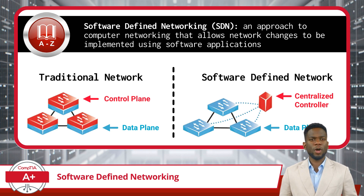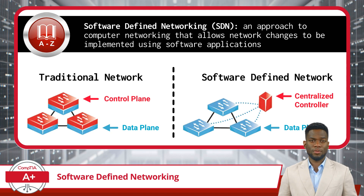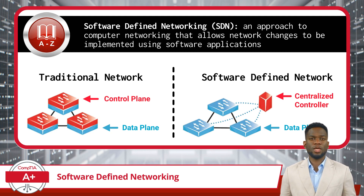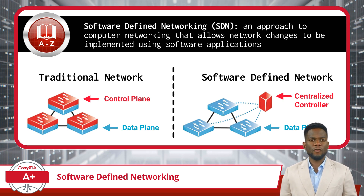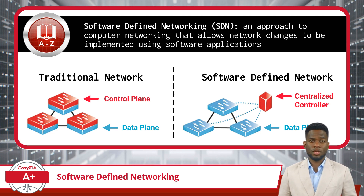The control plane is the part of a network that decides where the data should go. In traditional networks, each networking device, like a router or switch, has its own control plane, which means they make their own decisions about where to send data based on the device's configuration and network protocols. In software-defined networking, the control plane is separated from the individual devices and is centralized, typically in a controller or a set of controllers. This centralized control plane makes decisions about the network traffic and then instructs the devices on how to handle this traffic.